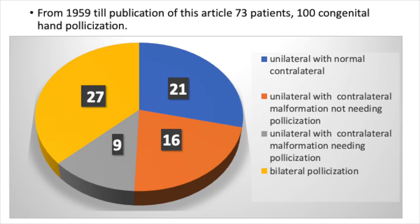From 1959 until publication of this article in 1971, a total of 73 patients were operated on and 100 congenital hands subjected to pollicization. Twenty-seven patients had bilateral pollicization; in 21 patients, unilateral pollicization was done because there was no contralateral abnormality; in 16 patients it was done because the contralateral malformation did not need pollicization; and in 9 patients the contralateral side also needed pollicization but had not yet been operated on at the time of publication.